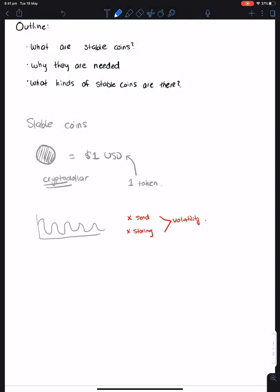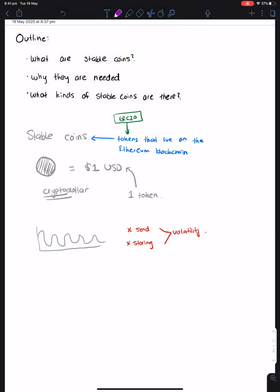A lot of these stablecoins can exist as coins on separate blockchains, but more popularly they are tokens that live on the Ethereum blockchain. These tokens are called ERC20 tokens. Don't worry if you don't understand what that means - just know that you have these tokens on the Ethereum blockchain.